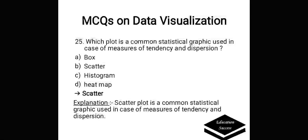Which plot is a common statistical graphic used in case of measures of tendency and dispersion? Options are: A. Box, B. Scatter, C. Histogram, D. Heat map. Correct answer is scatter plot. Scatter plot is a common statistical graphic used in case of measures of tendency and dispersion.